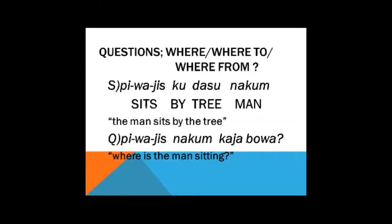Now let's look at where, where to, and where from. Beginning with where — talking about position. The statement: the man sits by the tree. I want to know where the man is sitting, so I omit the information about by the tree and add kaya boa — which means where — at the end: pita yi alum yisna kum kaibowa, where is the man sitting?